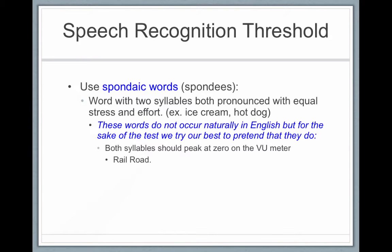Spondaic words are used to test the speech recognition threshold. Spondaic words are two-syllable words with equal stress on each syllable — for example: ice cream, hot dog, railroad, baseball. You want to read them rather monotonously.